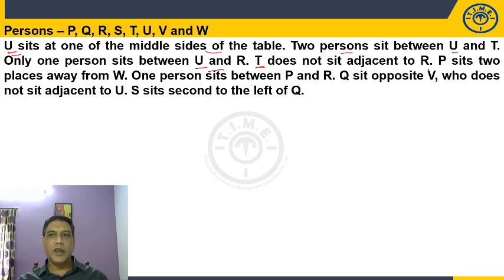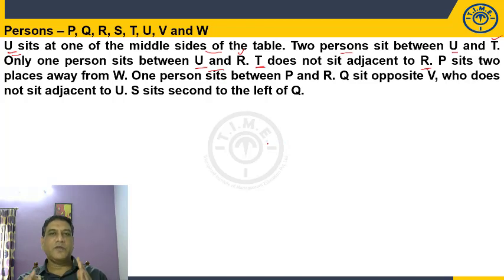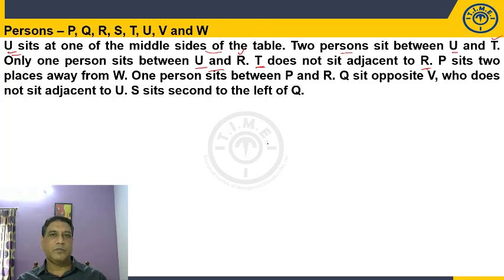The next statement is about T and R, which we already have placed — so it is in continuation. In all bank exams, please keep in mind that the statements are given in such a manner that you generally don't have to jump from the first statement to the fifth and come back to the second. Almost all puzzles are given in a proper sequence. Only at some point you may have to club a couple of statements together and then use them.